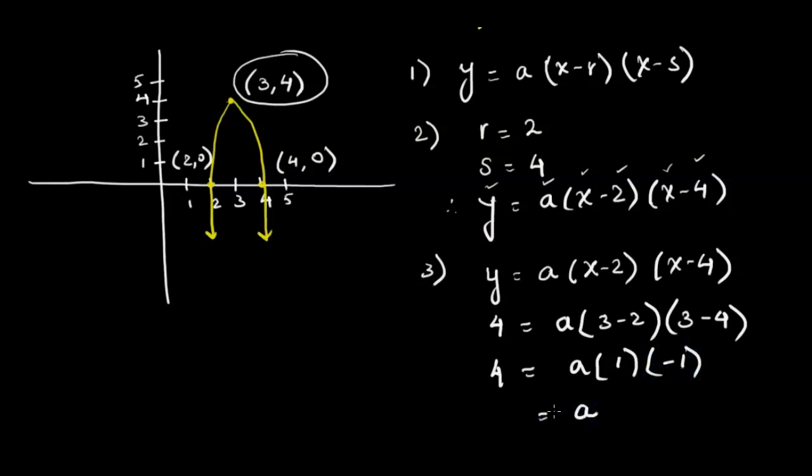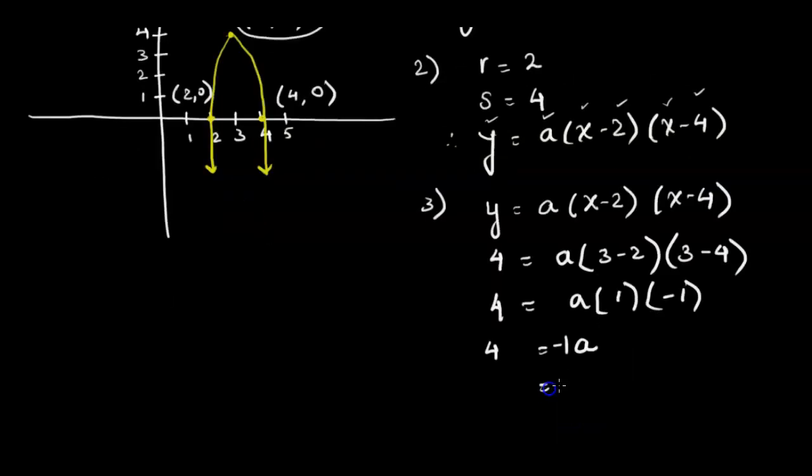So 1 times negative 1 is negative 1. Negative 1 times a equals 4. When we isolate for a, we take this negative 1 on the other side and divide 4 by it, which gives us negative 4.